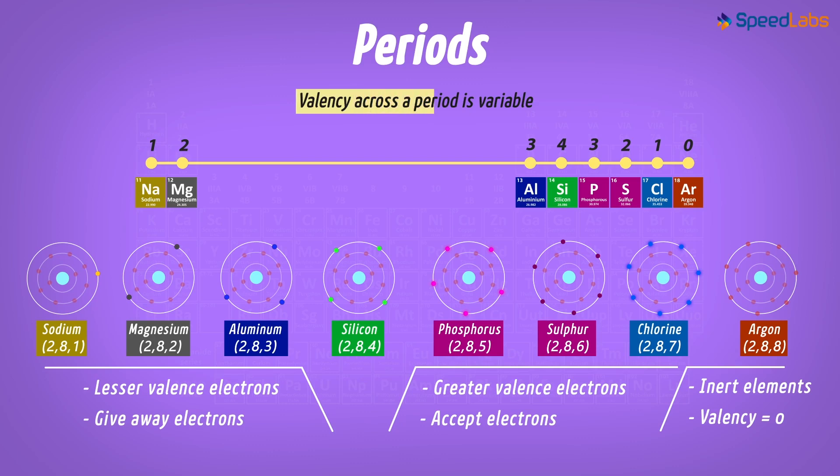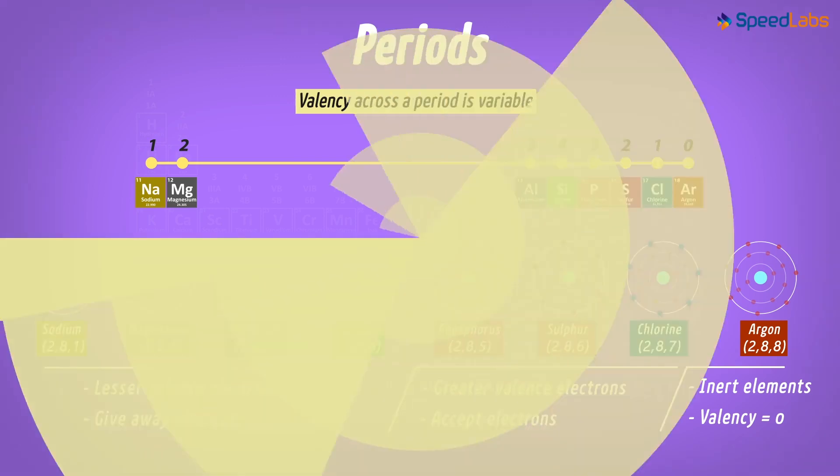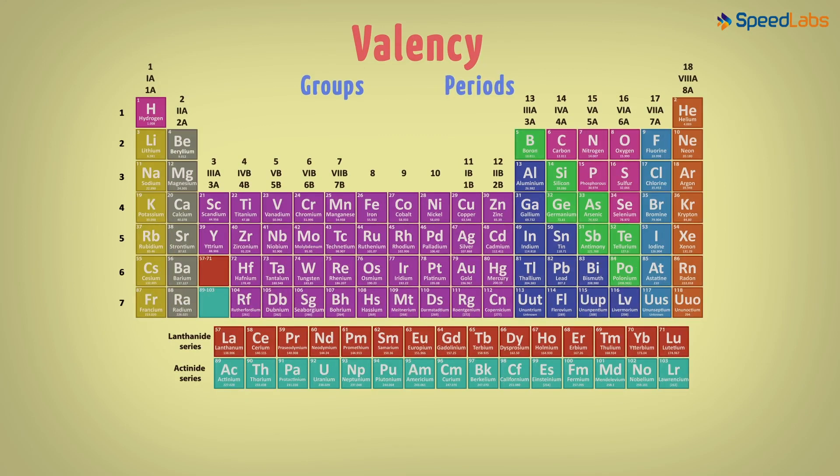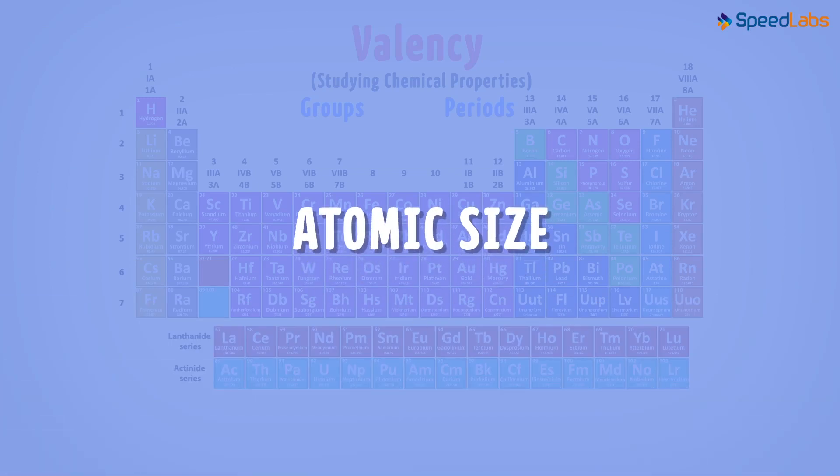This is how the valency varies across a period. So we learnt about valency of elements along the groups as well as the periods. That is the reason why valency is considered to be an important trend for studying elements. Now let us move a step ahead and talk about the atomic size in the next video.